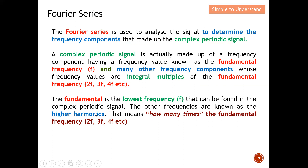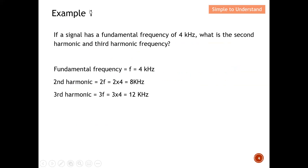Let's do a quick example to understand fundamental frequency and harmonics. If a signal has a fundamental frequency of 4 kHz — remember, fundamental has the lowest frequency — what is the second harmonic and third harmonic? The second harmonic is two times the fundamental frequency, which is 8 kHz. The third harmonic is three times the fundamental frequency, which results in 12 kHz.